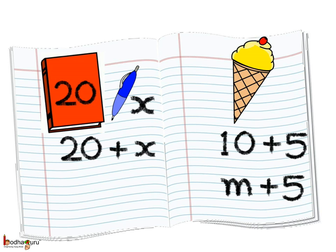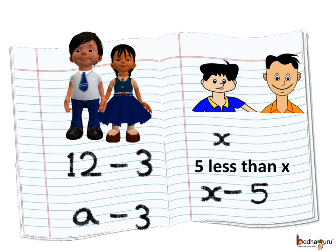So we see, we treat literal numbers or the variables as ordinary numbers when it comes to the four fundamental operators, i.e., plus, minus, multiply and divide. Kushi is 3 years younger than Aman.